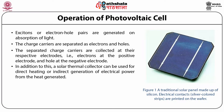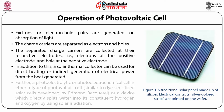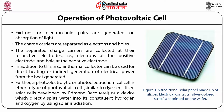In addition to this, a solar thermal collector can be used for direct heating or indirect generation of electrical power from the heat generated. In these devices, heat is supplied when sunlight is absorbed. Further, a photoelectrolytic or photoelectrochemical cell is either a type of photovoltaic cell similar to dye-sensitized solar cells developed by Edmund Becquerel, or a device which directly splits water into hydrogen and oxygen by using solar irradiation.